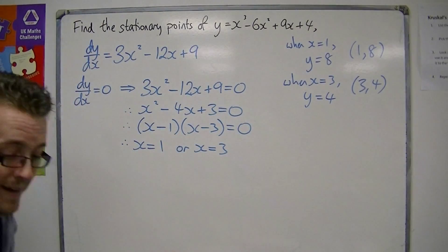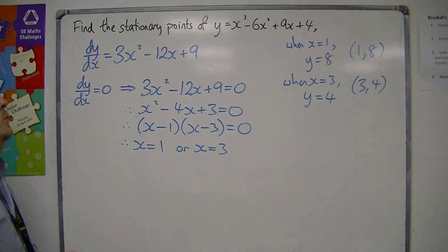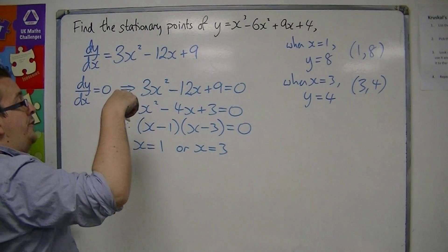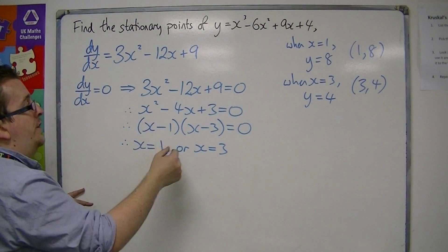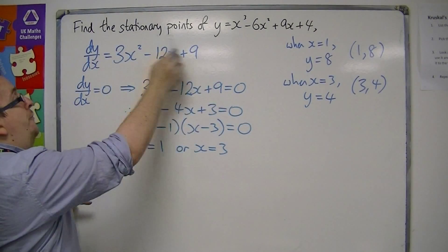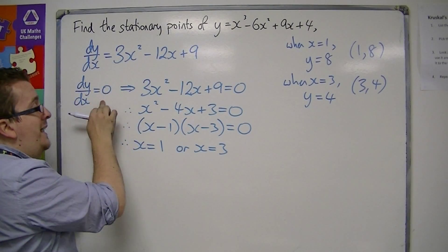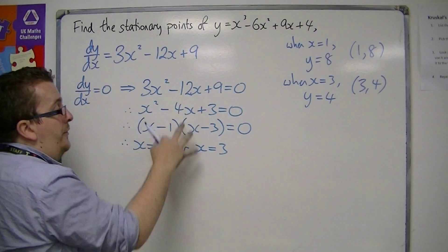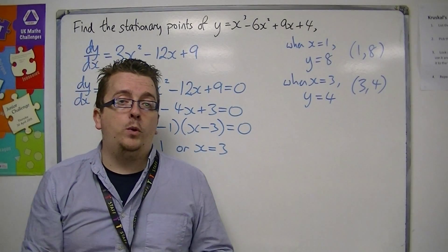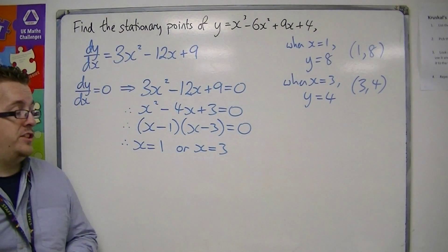So the main message from this video is: in order to find the stationary points of a curve, find the first derivative, put it equal to 0, and then solve the resulting equation. That is going to be your method.